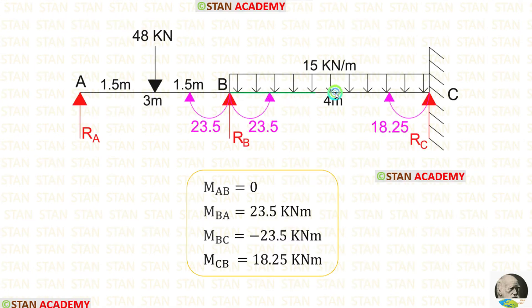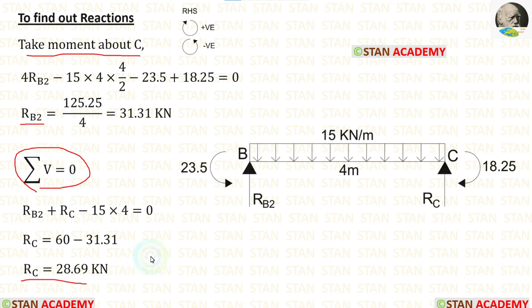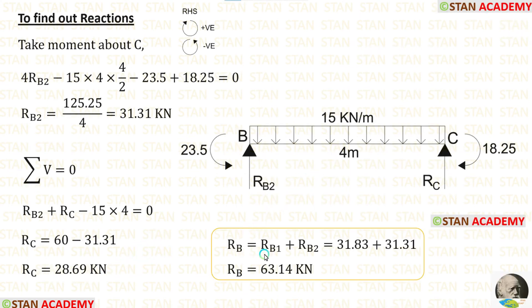Now let us take span BC and calculate the vertical reactions. In span BC, there are two moments: MBC acting in the anti-clockwise direction, and MCB acting in the clockwise direction. By taking moment about C, we can calculate RB2. Applying the summation of vertical forces equals 0, we calculate RC. At point B, we have calculated RB two times; adding them gives RB, which is equal to 63.14 kN.